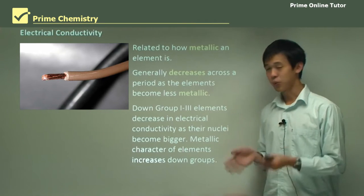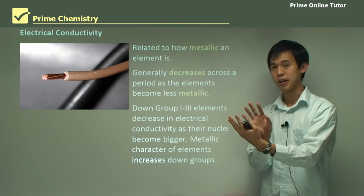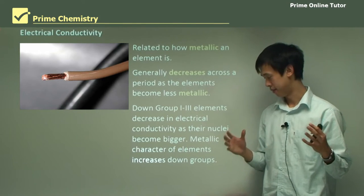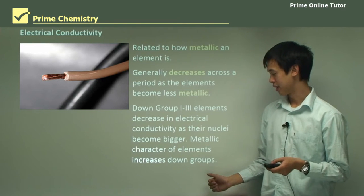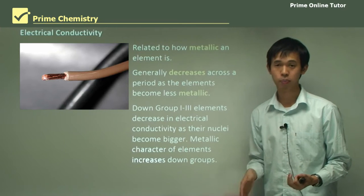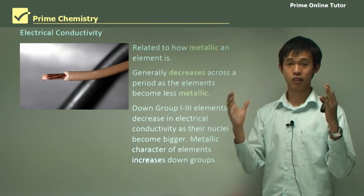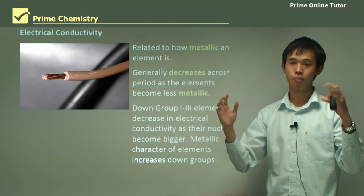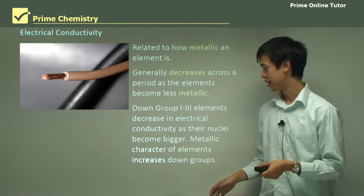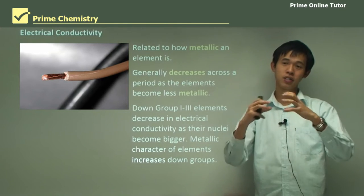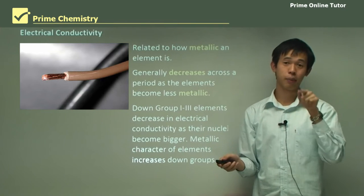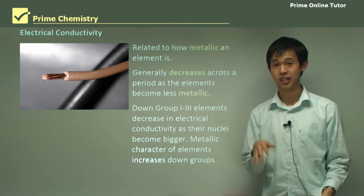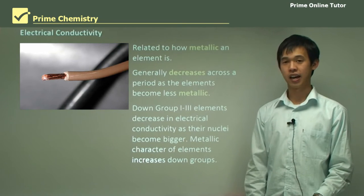Now down groups one to three — the metallic group on the very left-hand side of the periodic table — the electrical conductivity decreases because their nuclei get bigger. The metallic character of elements increases down groups, that's true, but because the nuclei are getting much bigger due to all those extra protons, when an electron tries to go through the lattice it bumps into all these very big nuclei and can't get through quickly. So while it gets more metallic going down, the electron has a hard time getting through the lattice because there's just too much stuff in the way, and that's why electrical conductivity decreases even though metallic character increases.